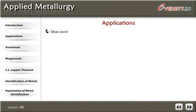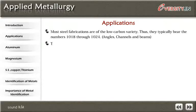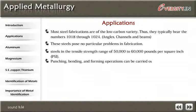Applications: Most steel fabrications are of the low carbon variety, thus they typically bear the numbers 1018 through 1024. Angles, channels, and beams — these steels pose no particular problems in fabrication. Steels in the tensile strength range of 50,000 to 60,000 pounds per square inch (PSI). Punching, bending, and forming operations can be carried out with standard tooling and with minimum wear on equipment.